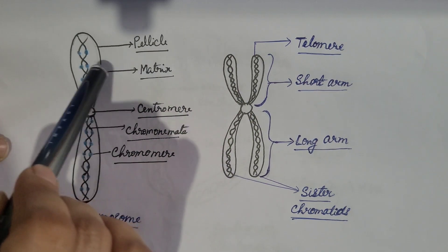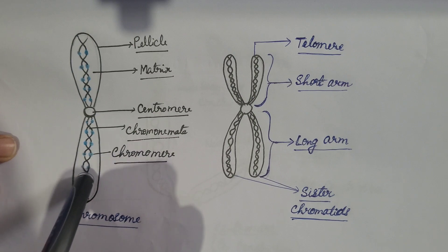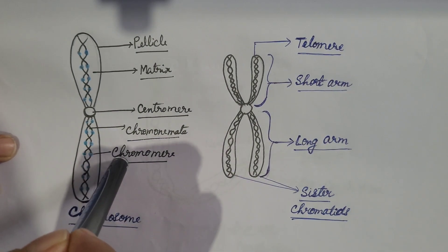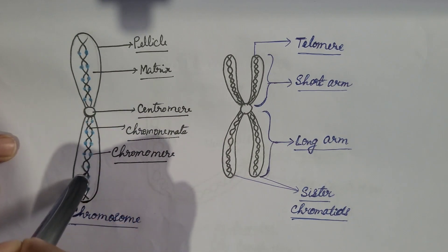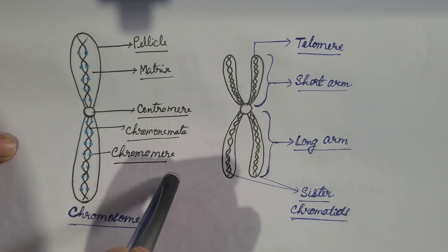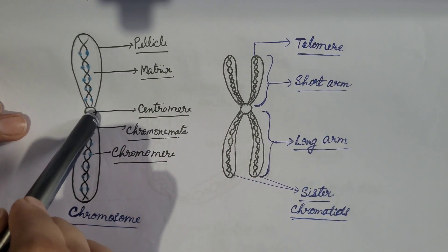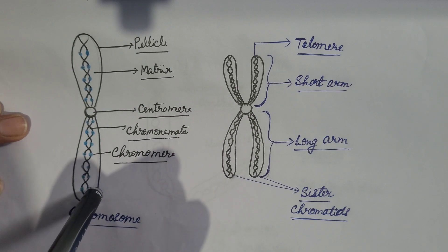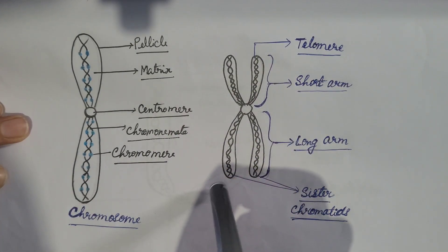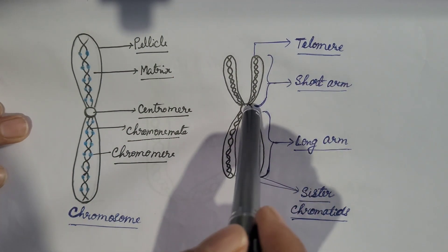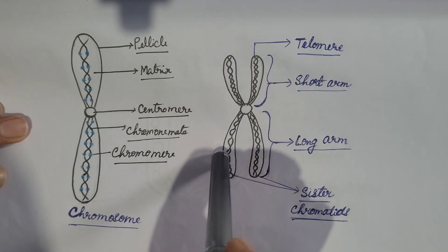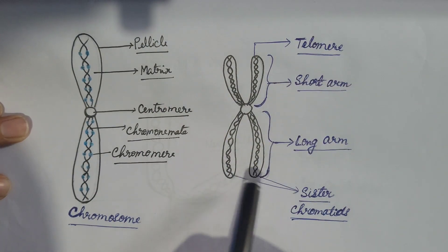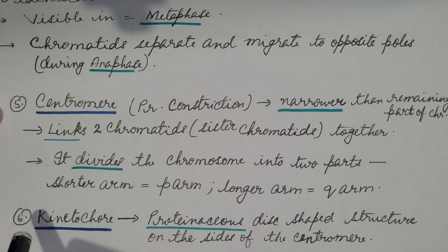In the diagram, the outermost proteinaceous covering is the pellicle; the ground substance is the matrix; the long coiled thread throughout the chromosome length is the chromonemata; and the bead-like structures on the chromonemata are the chromomeres, where genes are located. The centromere, or primary constriction, divides the chromosome into the p arm (shorter) and q arm (longer). At metaphase, two sister chromatids are attached at the centromere, each with its own DNA. The terminal parts of the chromosome are known as telomeres.